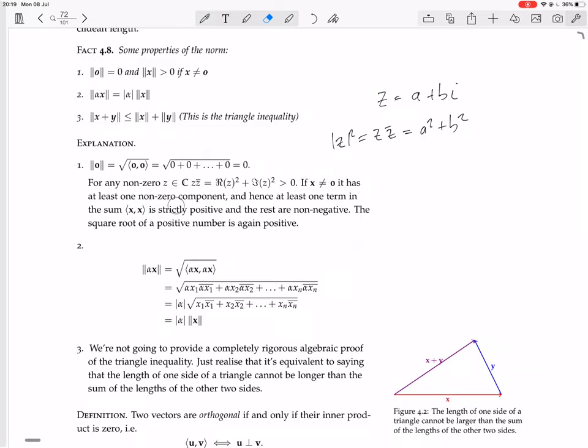So at least one of those terms in this sum is strictly positive because it has this form, something greater than zero. And the rest are non-negative. So they might be zero if those terms are zero, but none are negative, so the whole thing is positive. The square root of a positive number is positive.